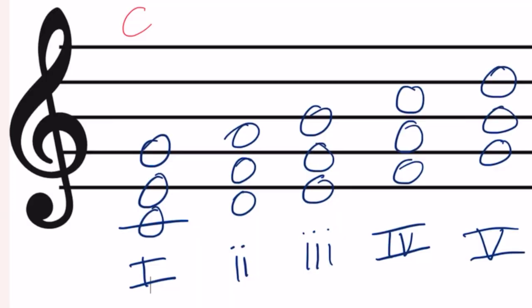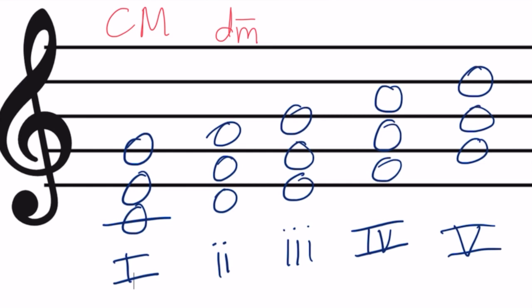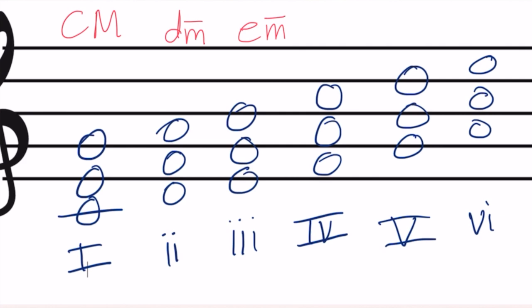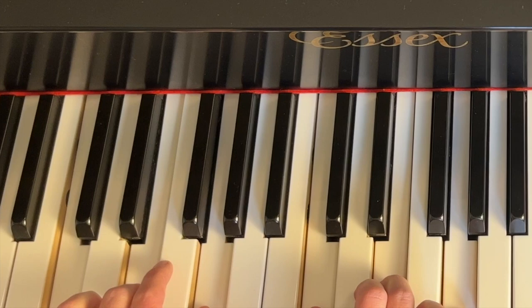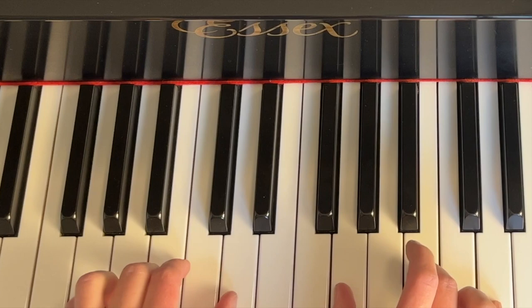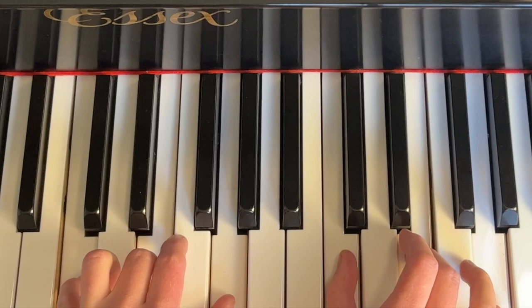You can also practice saying the letter names of each chord. Since we're playing these triads in root position and the chord qualities in a major scale always stay the same, you just look at the bottom note: C major, D minor, E minor, F major, G major, A minor, B diminished, C major. When you become familiar with these letter names you'll start to recognize these chords when they appear in other pieces of music — how they sound and how they feel under your hand.